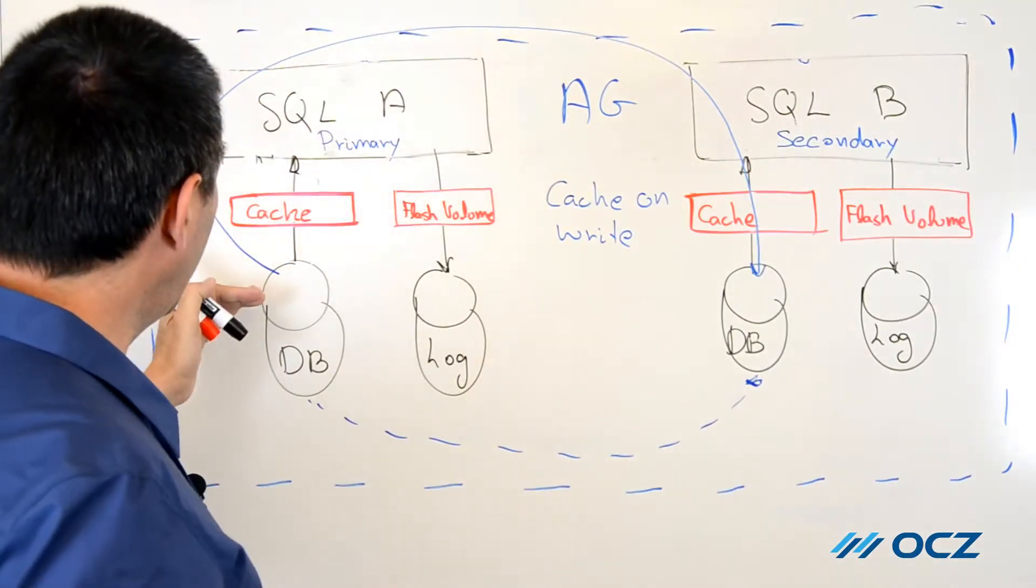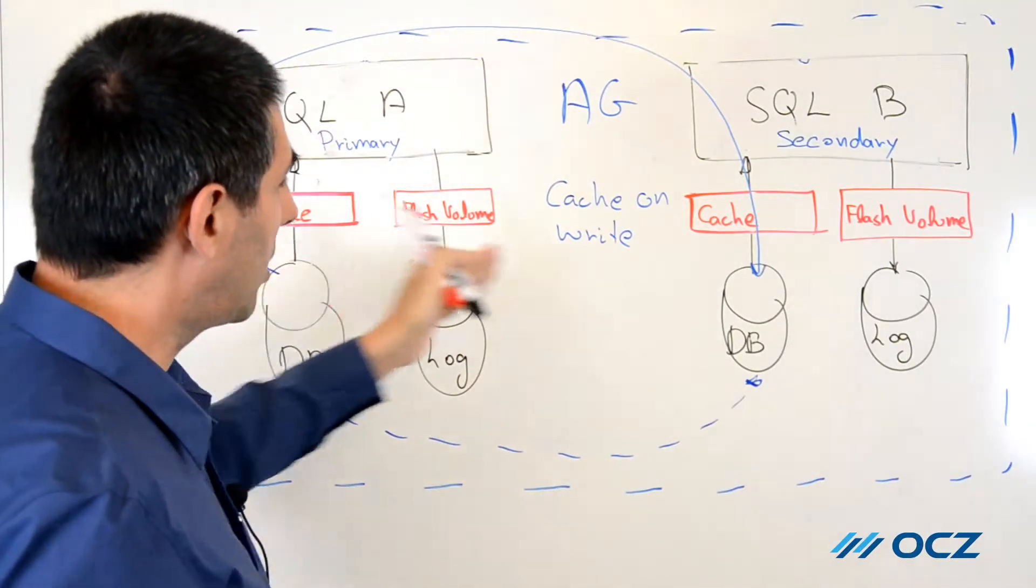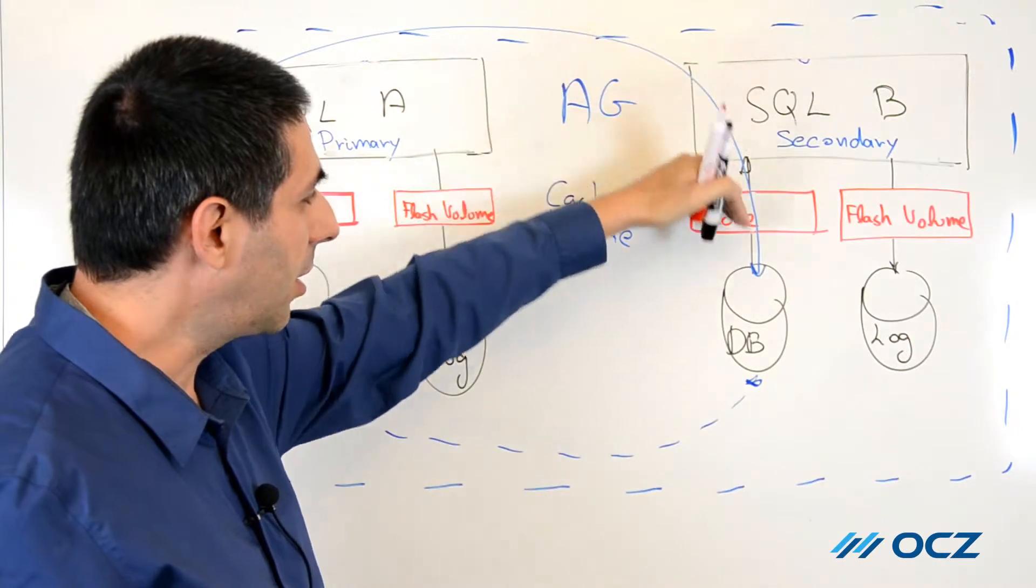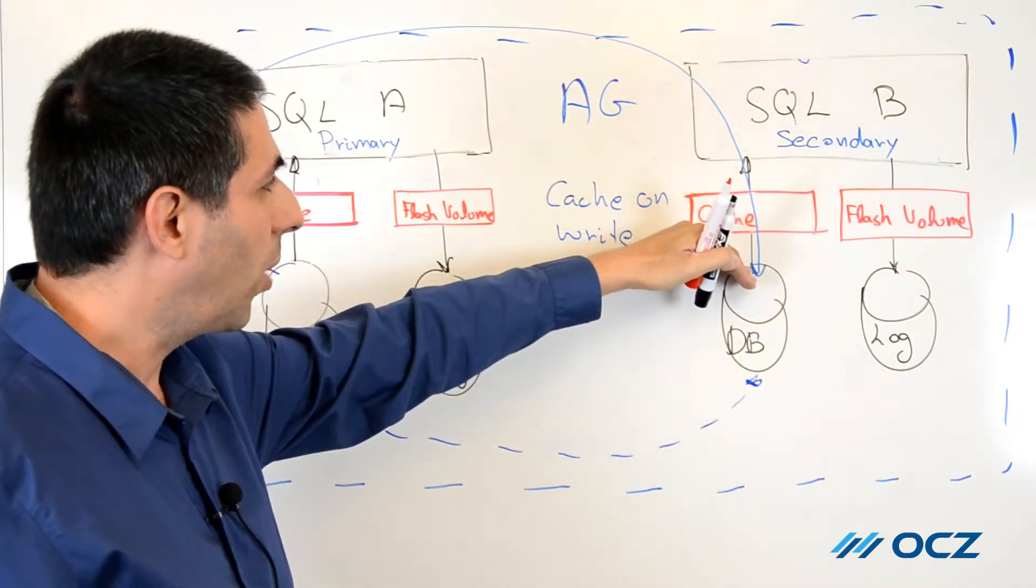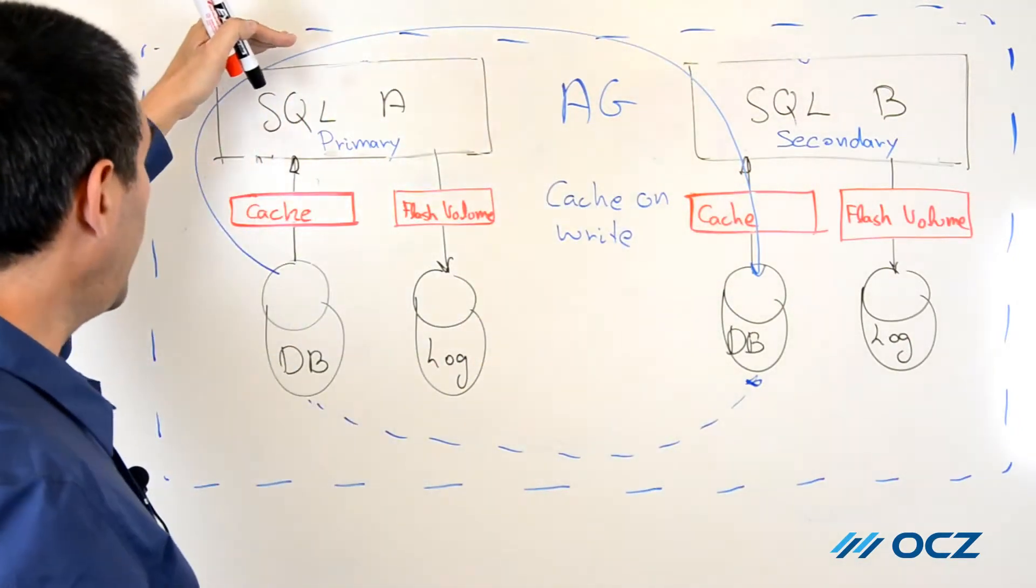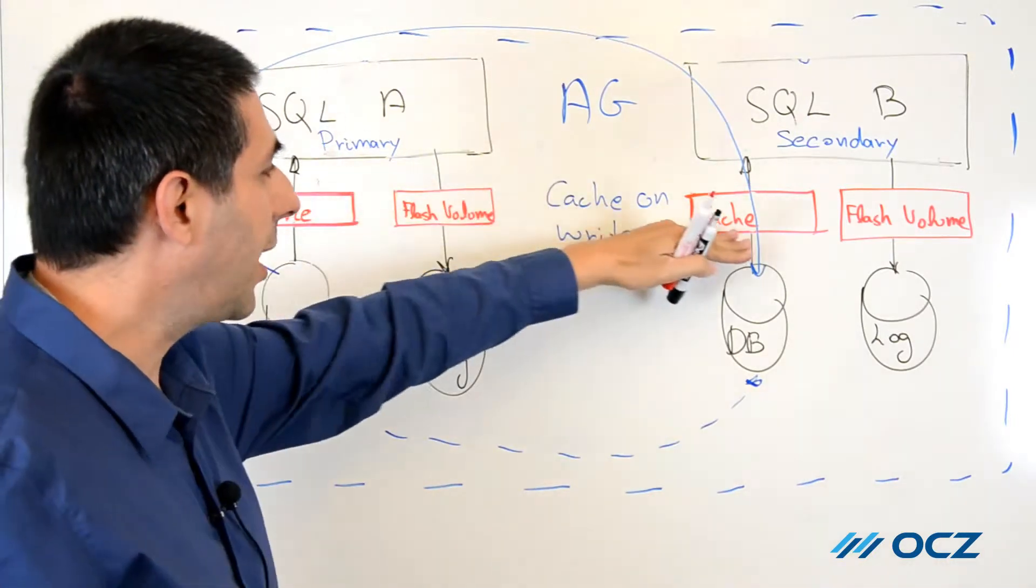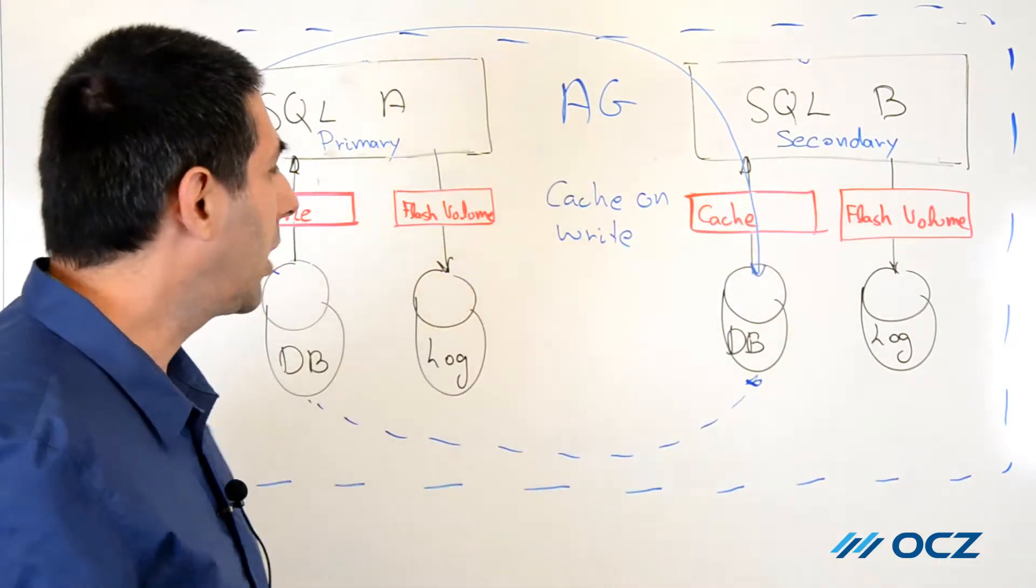Due to this policy, all the data that is written from the primary database to the secondary database will be inserted into the cache. The data from the secondary database will reside in the cache.